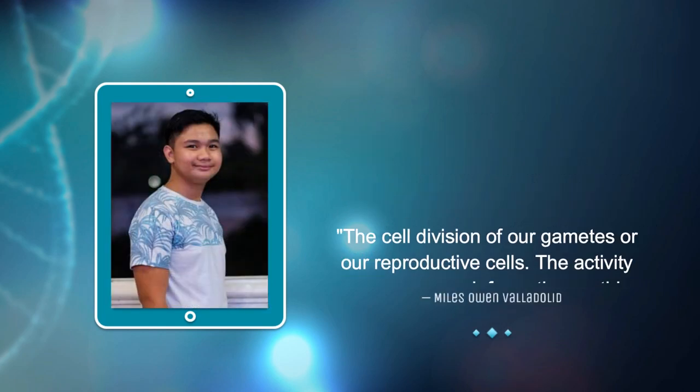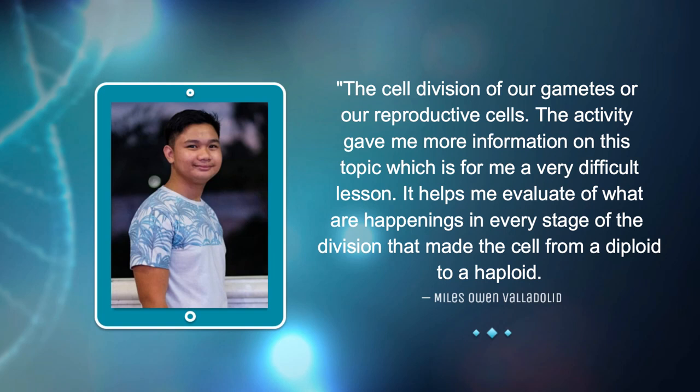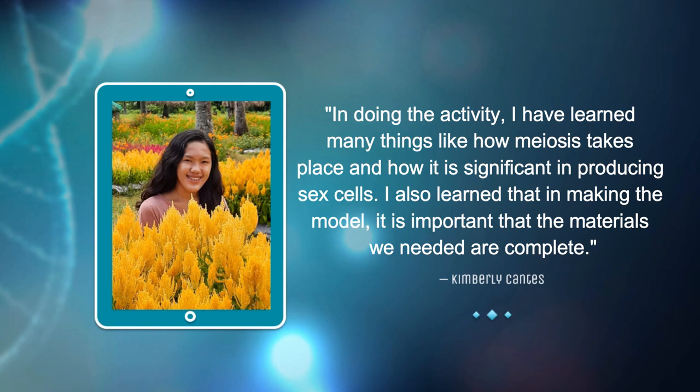What I learned from this activity is the stages of meiosis — the cell division of our gametes or reproductive cells. The activity gave me more information on this difficult topic, helping me understand what happens in every stage from diploid to haploid. In doing the activity, I also learned that having complete materials is important; I had a hard time because I couldn't find scissors, so I used a knife to cut the yarn. But overall, I had a great time making the model.